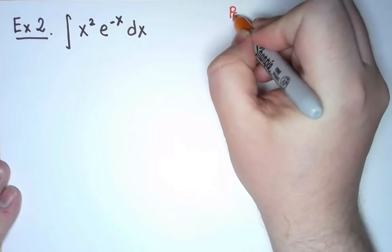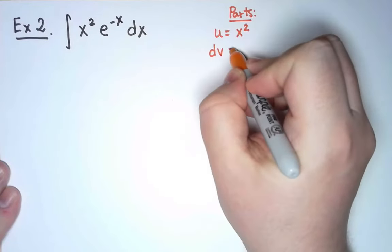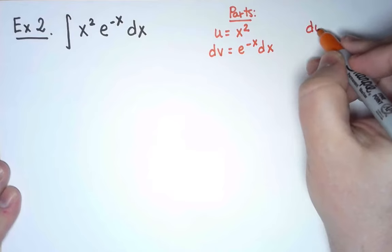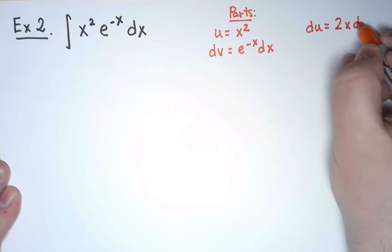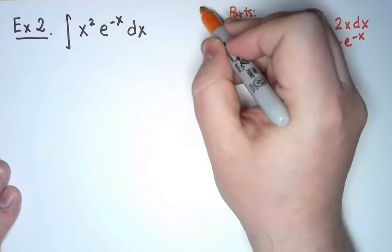In other words, I will use integration by parts with u equals x squared and the rest as dv. Then the derivative of x squared is 2x, and an antiderivative of e to the minus x is minus e to the minus x.